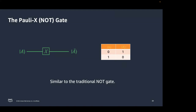Let's look at some single-qubit quantum gates in more detail. One of the simplest is the Pauli-X NOT gate — similar to the traditional NOT gate, it flips the state of the qubit. If the qubit is in state |0⟩, the output is |1⟩, and if the qubit is in state |1⟩, it is flipped to |0⟩.